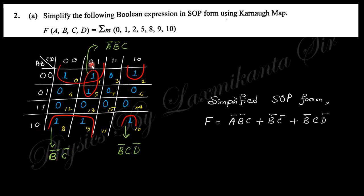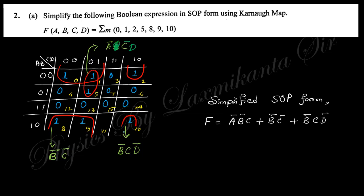In that group of four, B is constant as B-bar and C is constant as C-bar. For the group of two ones, A-bar is constant and C-bar and D are constant, giving the term A-bar C-bar D. For the other group of two, B-bar is constant along with C and D-bar, giving B-bar C D-bar. So the simplified answer combining these groups is: B-bar C-bar + A-bar C-bar D + B-bar C D-bar.